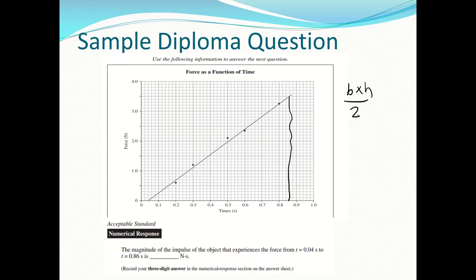My height is easy. My height goes to this point right here, and every tick is 0.1, so we have 3.5 newtons. My base is a little bit trickier. This is 0.86 and this is 0.04, and every increment is 0.02. So my base down here is going to be 0.82 seconds — if I subtract those two numbers.